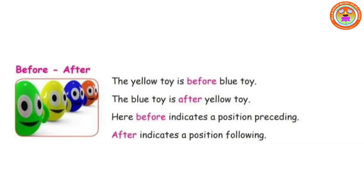Students, the next preposition words are before and after. See this picture. Where is the yellow toy? The yellow toy is before the blue toy. Then where is the blue toy? The blue toy is after the yellow toy. So here, before indicates a position preceding, and after indicates a position following.